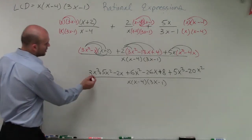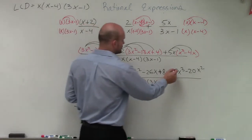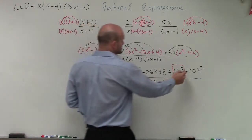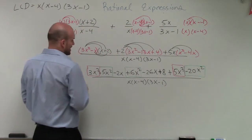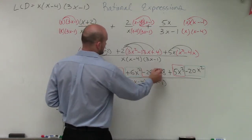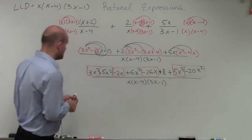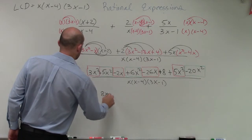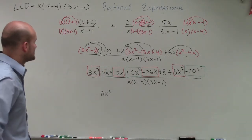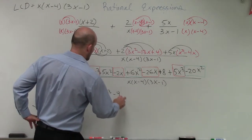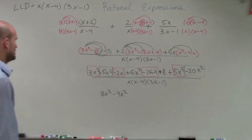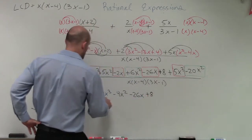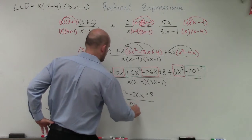Now we combine like terms, using color coding to keep track. For the cubed terms: 3x³ plus 5x³ equals 8x³. For the squared terms: 5x² plus 6x² minus 20x² equals negative 9x². Then minus 26x, plus 8. So the final numerator is 8x³ minus 9x² minus 26x plus 8, all over x times (x minus 4) times (3x minus 1).